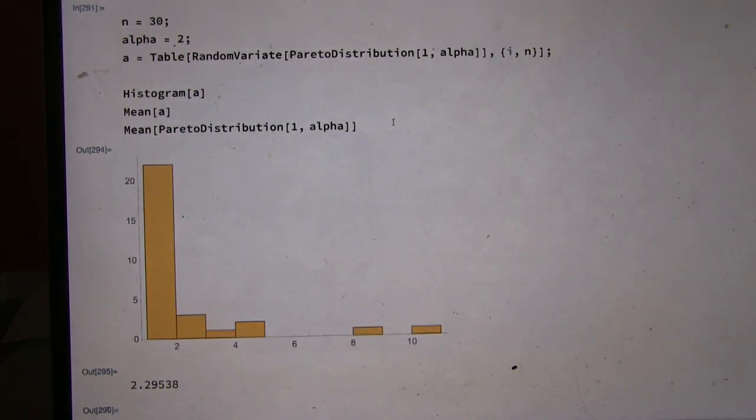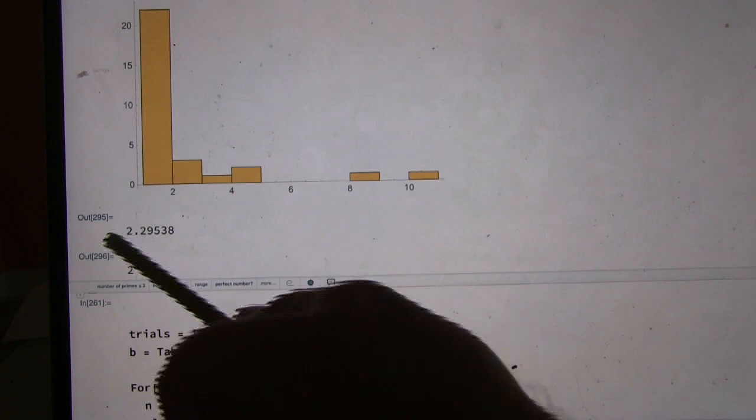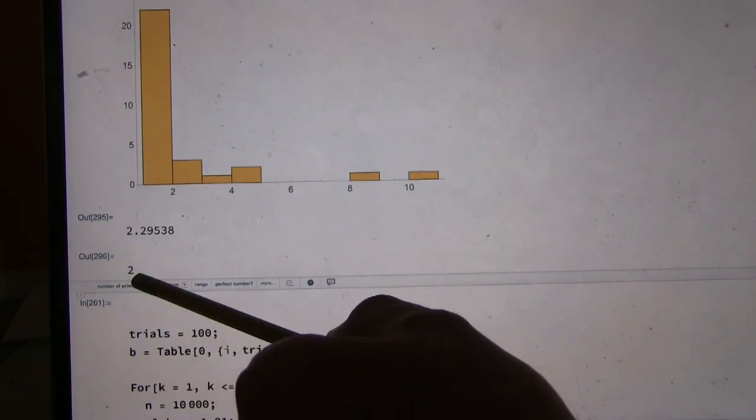And when I pick 30 numbers from it, looks like I may have zoomed in more than I should have. So when I run 30 numbers from it, I get the mean of 2.29 and the true mean is actually 2.